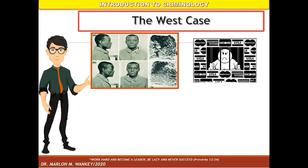From the Bertillon measurements obtained, the record keeper went to the file and returned with the card the measurements called for, properly filled out, and bearing the name William West. This card was shown to the prisoner, who denied it and said, 'That's my picture, but I don't know where you got it, for I know I have never been here before.' The record clerk turned the card over and read the particulars, including the statement that this man was already a prisoner at the same institution, having been committed to a life sentence on September 9, 1901 for the crime of murder — as stated by Harris Hawthorne Wilder and Bert Whitworth in 1918.